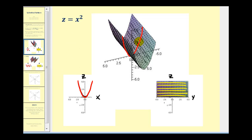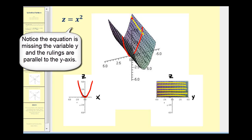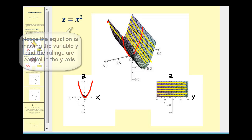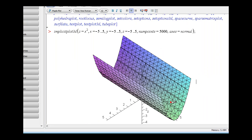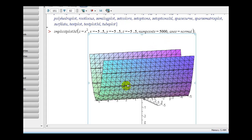The surface is generated by the set of parallel lines that intersects this curve. If we turn this sideways to look at the yz plane, we would have an infinite number of parallel lines called the rulings, and all of these lines would generate the surface. If we take a look at this using Maple, here's the surface, and if we drag and move this around you get a better idea of what this surface looks like.